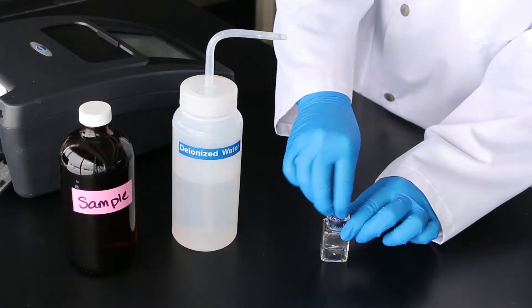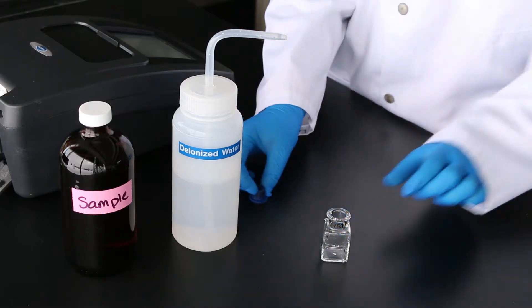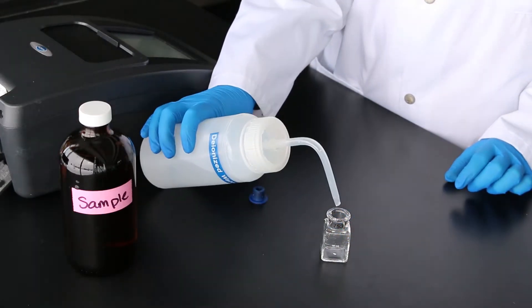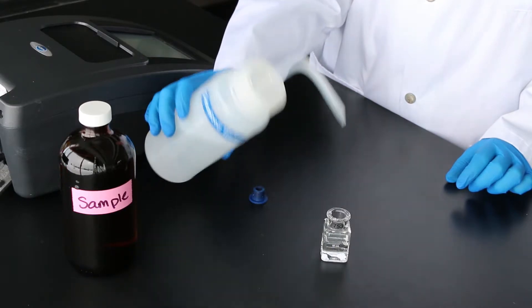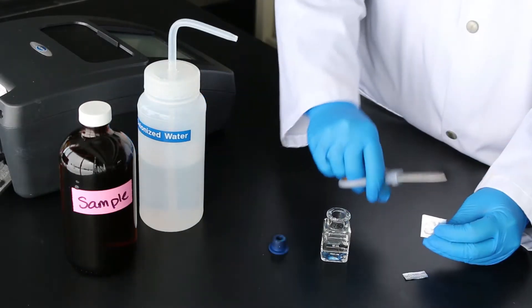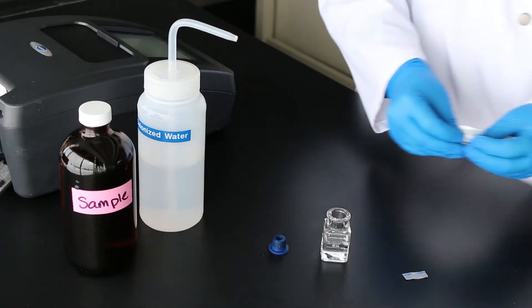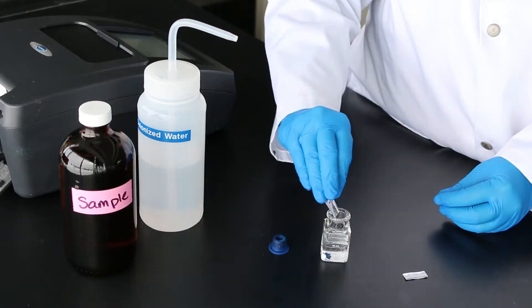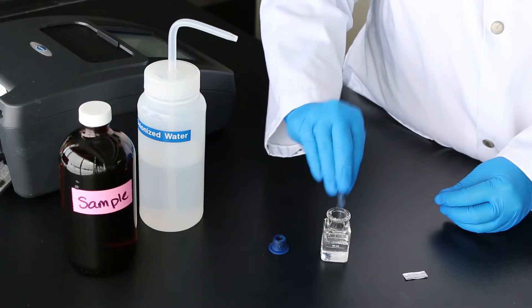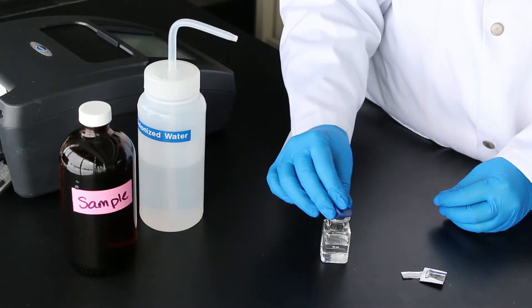As best practice, a reagent blank should be measured for each new lot of reagent. A reagent blank is completed by replacing the sample water with deionized water and following the same method for analysis. If a value is obtained, it can be subtracted from the sample results to minimize the interference caused by the reagent.